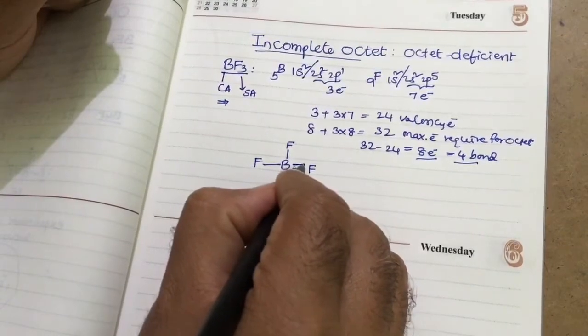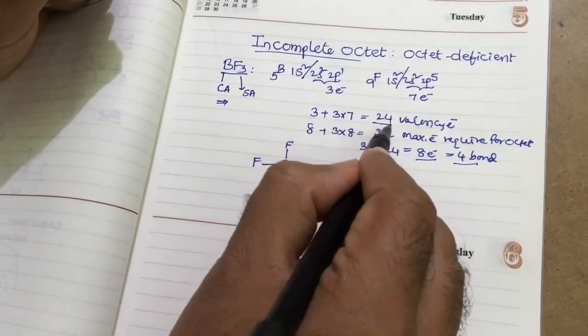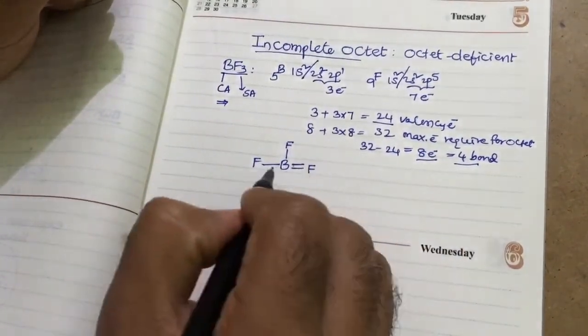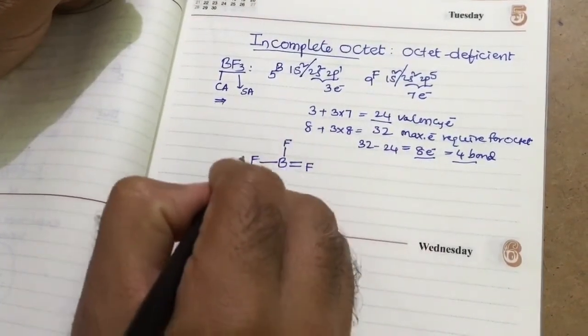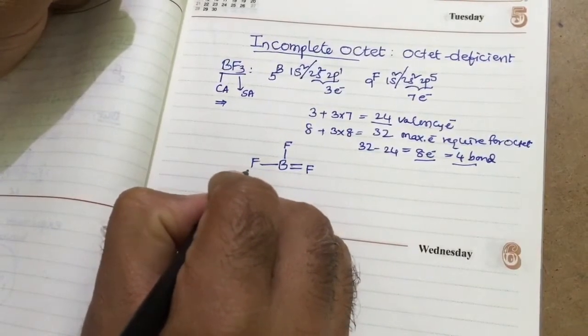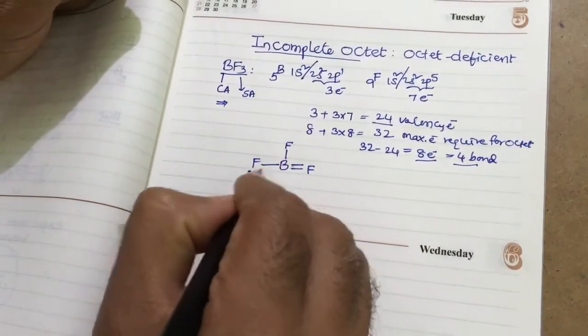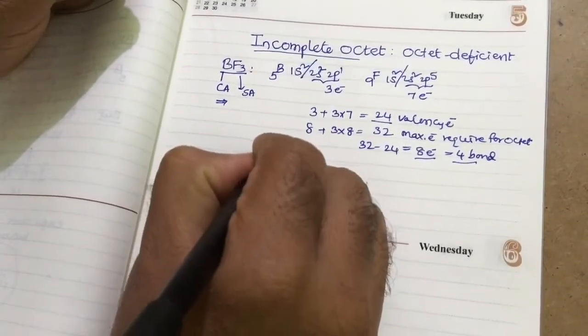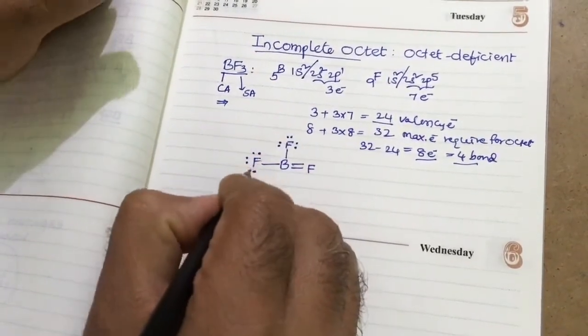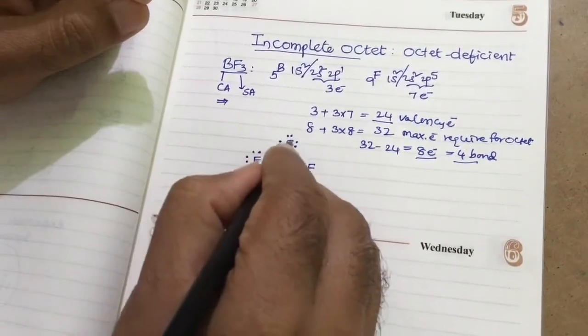So in between any one of the fluorine, it has 1 more bond. Total, how many valence electrons are present? 24. Each bond means 2 electrons. 4 times 2, 8 electrons. Then remaining electrons, we have to arrange around the fluorine.